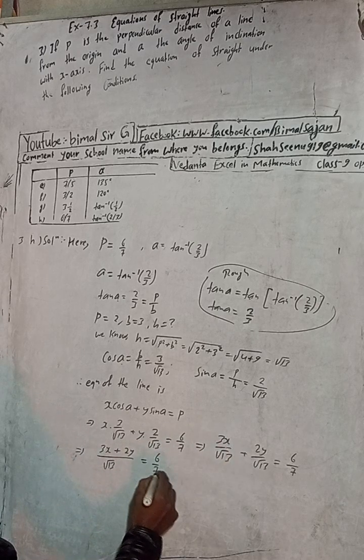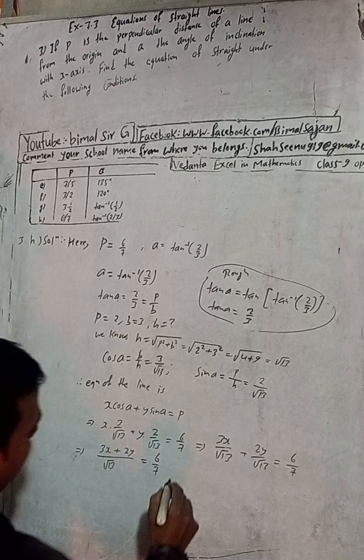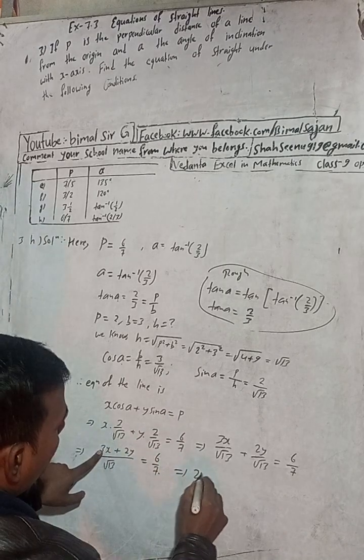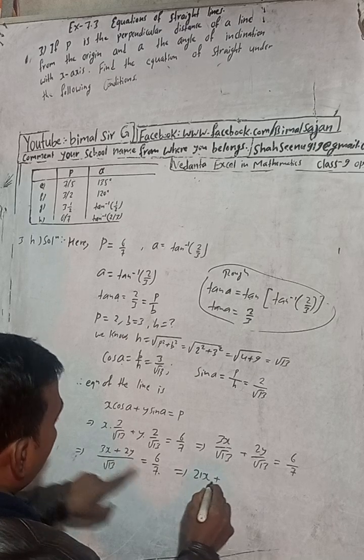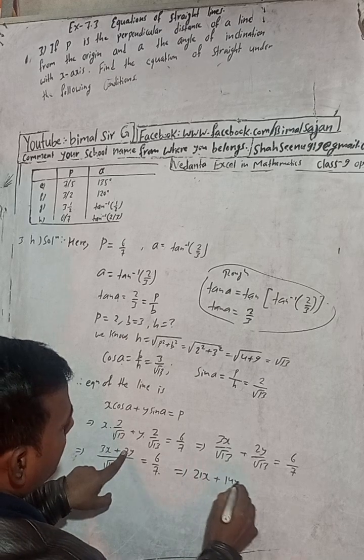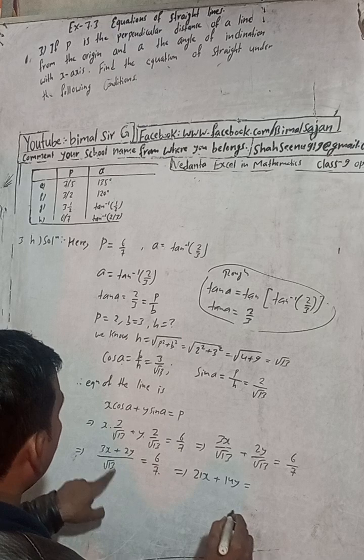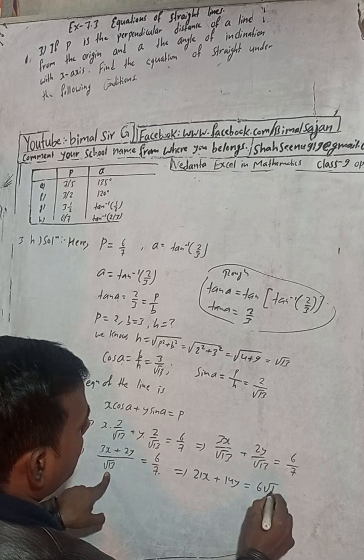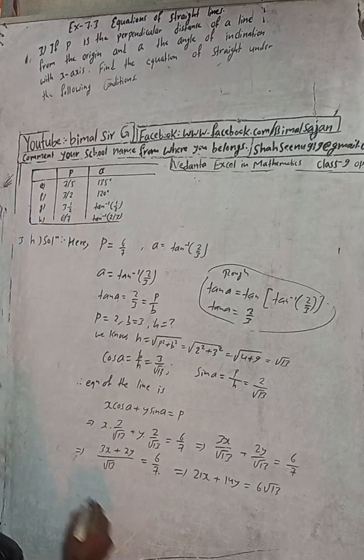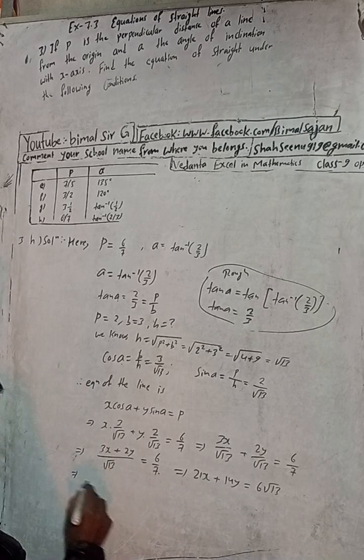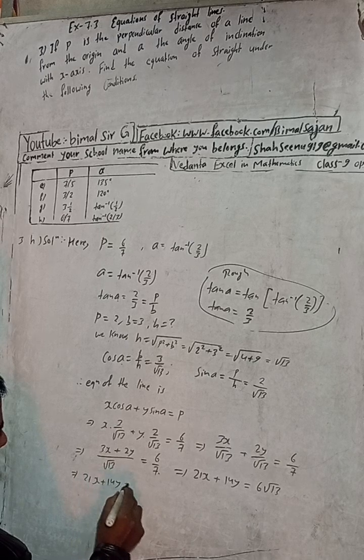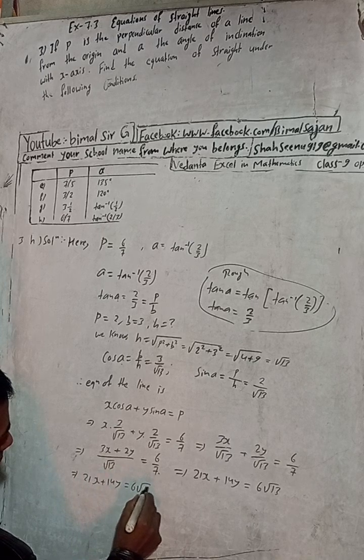Now cross multiply. 7 times 3x, 7 threes are 21x, plus 7 times 2y is 14y, is equal to 6 into root 13, so 6 root 13. Now this implies 21x plus 14y is equal to 6 root 13. This is the answer.